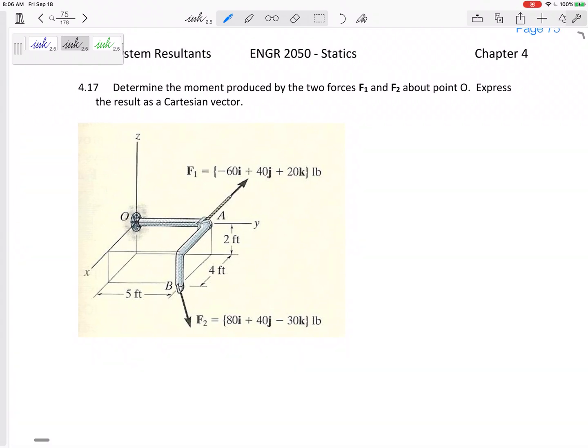Alright, so here's another one. Let's determine the moment produced by the two forces about point O. Moment about a point. Moment about point O is R cross F, R cross F.